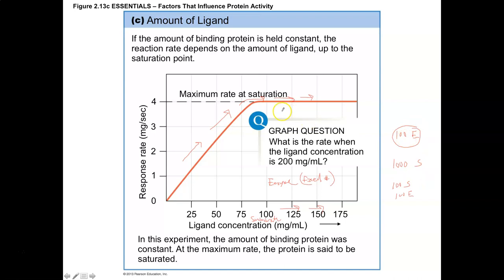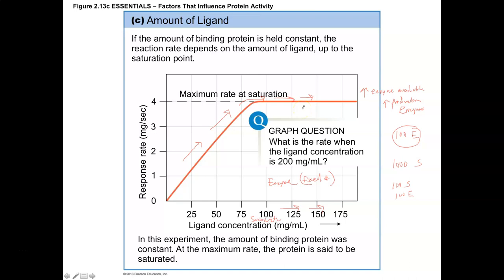If you wanted to make the reaction go faster, you would have to increase the amount of enzyme available. That would require the cell to increase its production of enzyme. If the body needs a reaction to go faster, we're going to have to increase enzyme production, because there is this saturation point. No matter how many more substrates you have, you can't make the reaction go any faster.